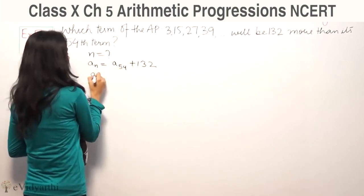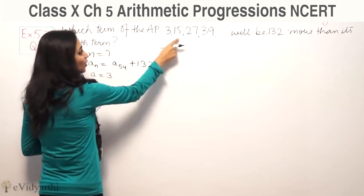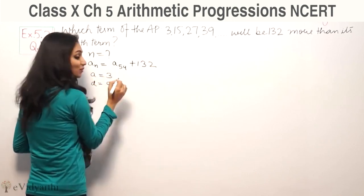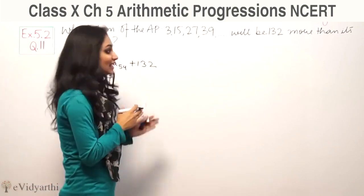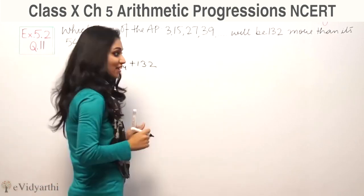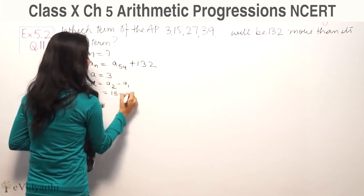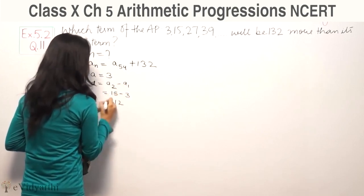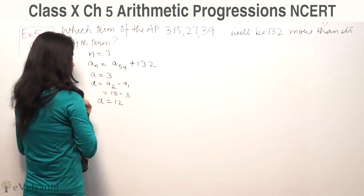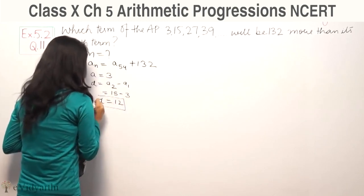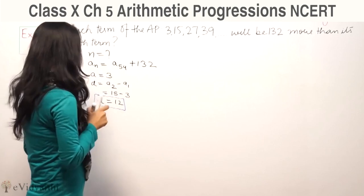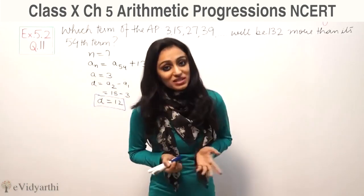First term we have given here is 3. Common difference d equals a2 minus a1, so 15 minus 3 equals 12. The common difference is 12.